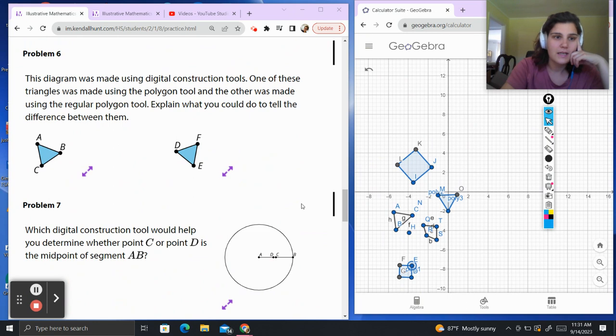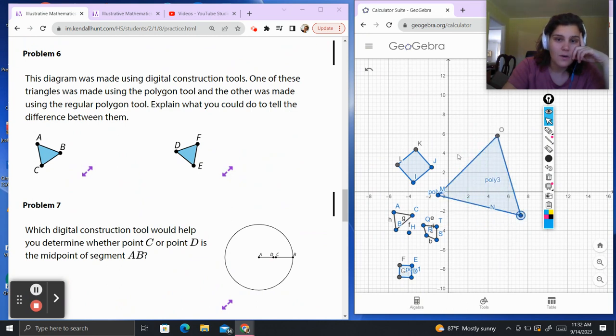Problem 6. This diagram was made using digital construction tools. One of the triangles was made using a polygon tool and the other was made using the regular polygon tool. Explain what you could do to tell the difference between them. Similar to the last question we had, this dude over here is my regular polygon. When I drag him, it stays a regular polygon. I would assume this was made using the regular polygon tool.